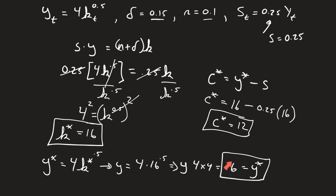Why is that the case? Because 25% needs to go towards delta and n. So if 25% is going towards replacing the depreciated capital and the overall amount of new people, then 75% is left over for consumption. So that's how we get the 12.